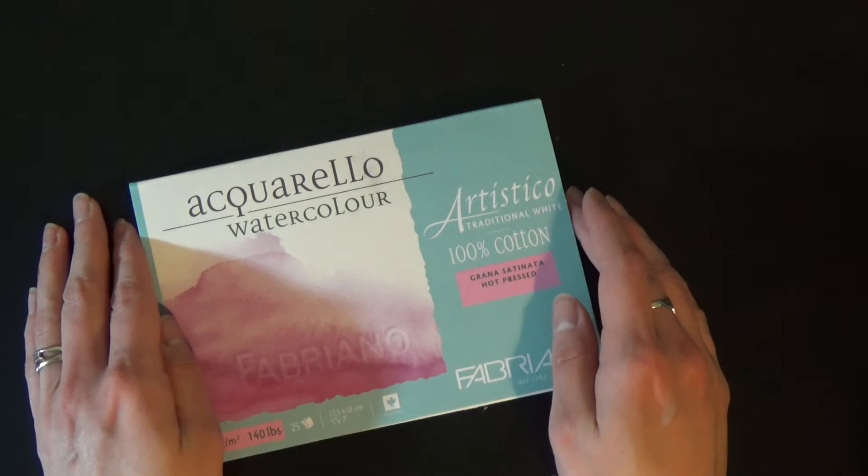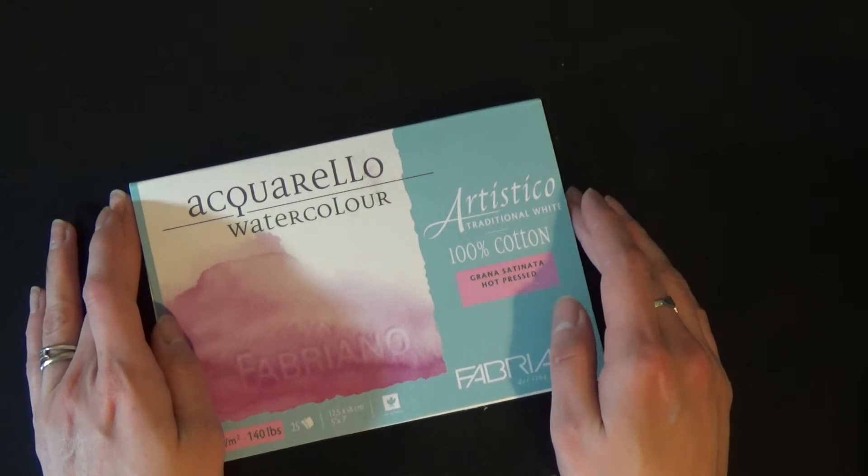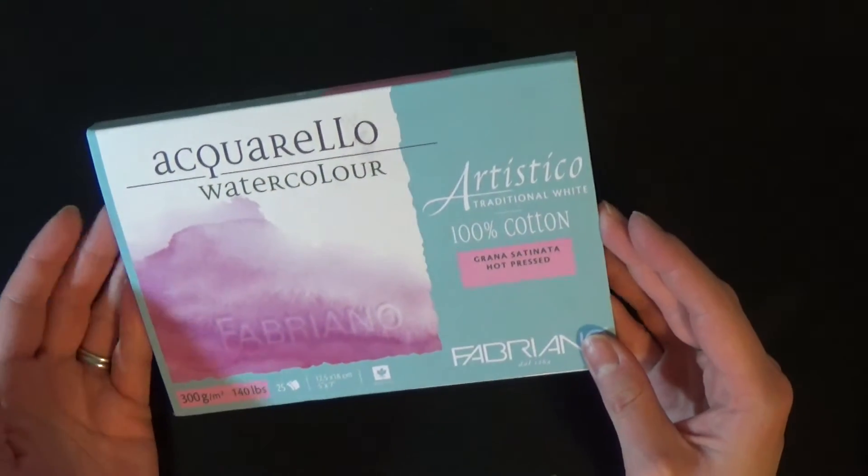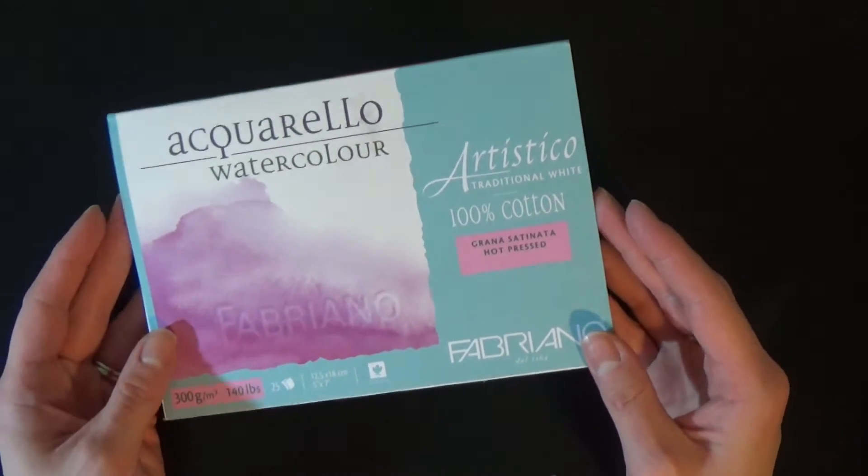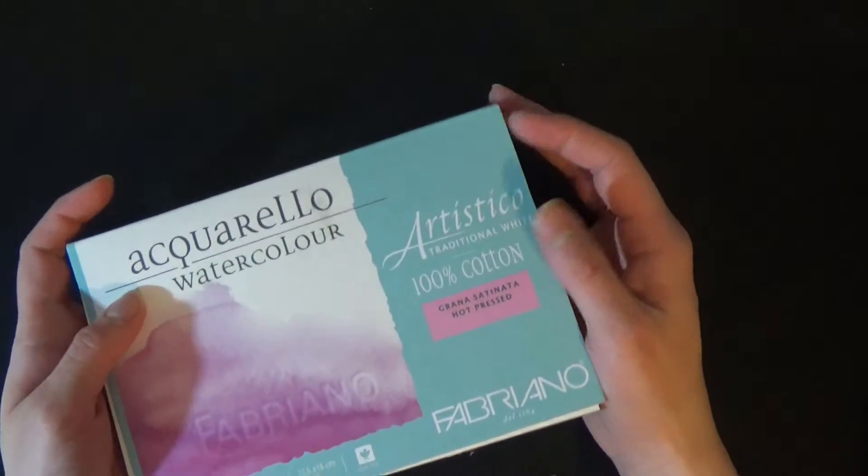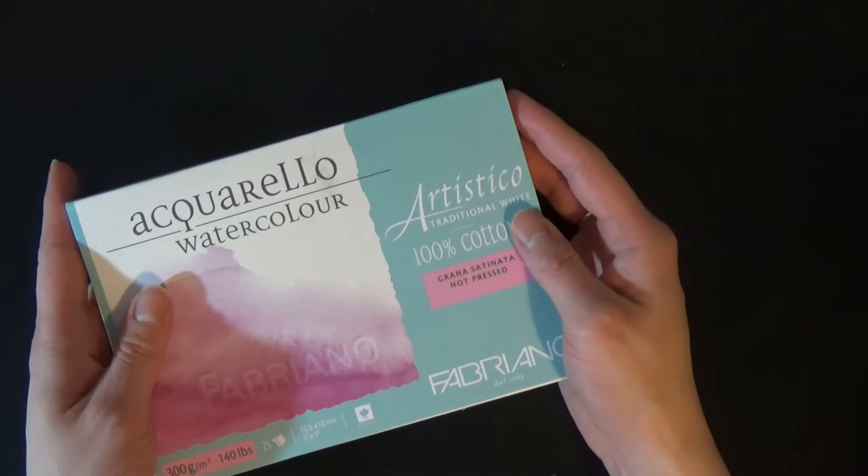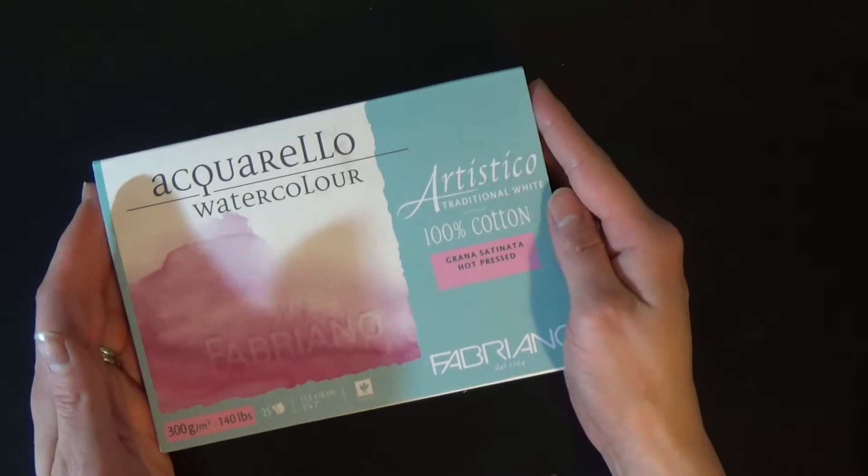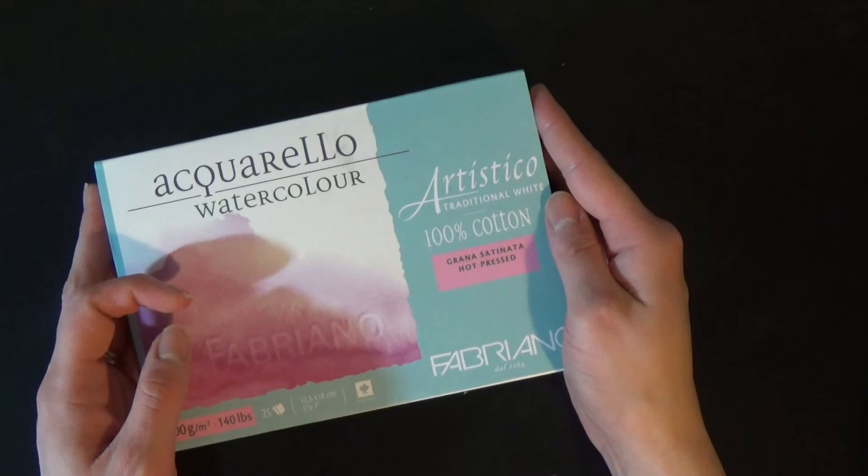I like to use Fabriano Artistico hot press watercolor paper. So the one I have here is just a little 5 inch by 7 inch pad. It's in traditional white. These days I do actually prefer the extra white more than the traditional white but I have a lot of traditional white paper here so I'm going to keep on using it until I use it all up. But really either traditional white or extra white they're both good.